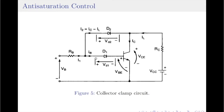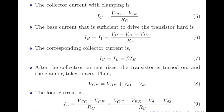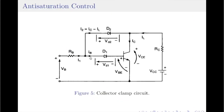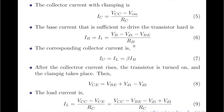The base current IB is given by the equation IB = (VB − VD1 − VBE) / RB. Once you find the value of IB, you can write an equation for the collector current IC because they are related by the equation IC = β × IB.